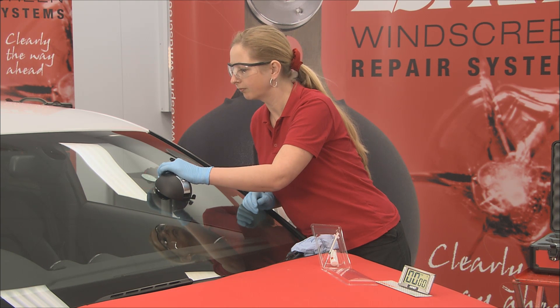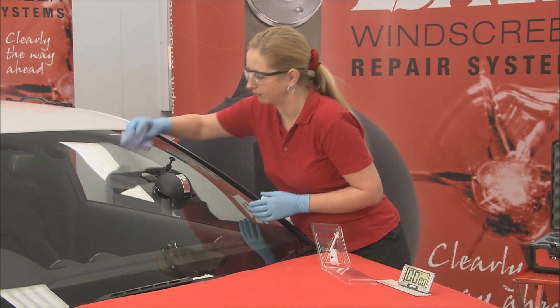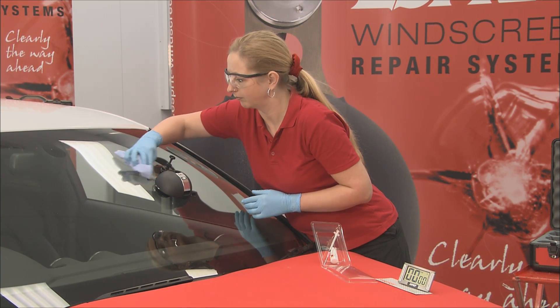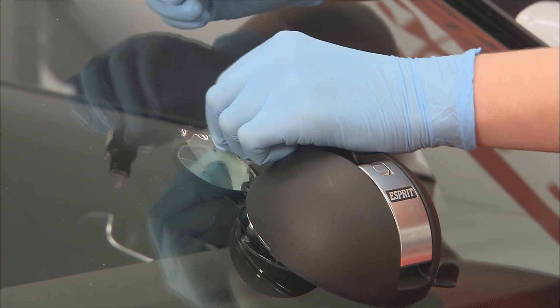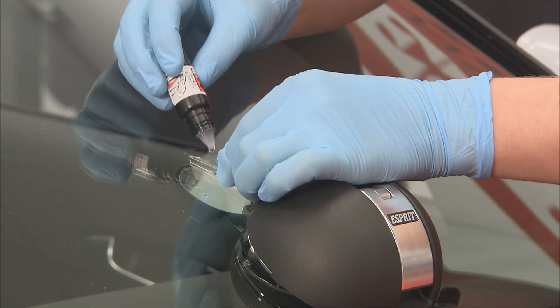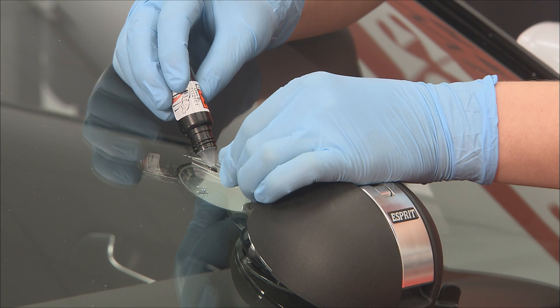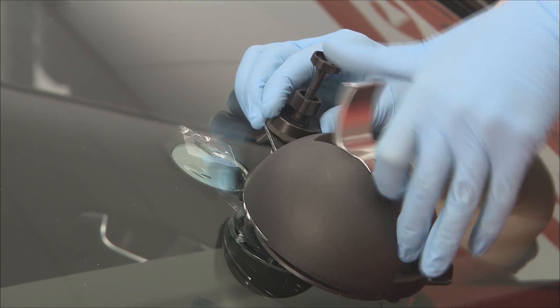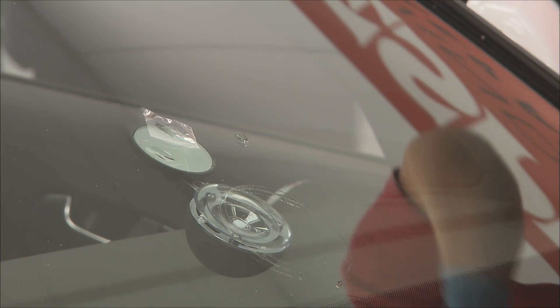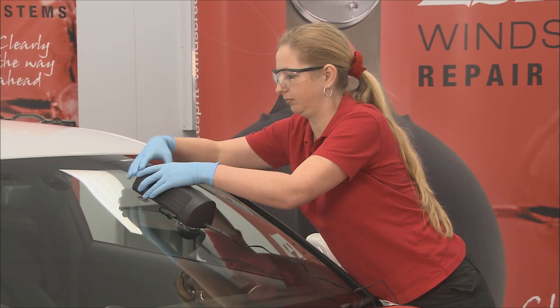To finish the repair, the arm is rotated to one side and any excess resin is wiped off. A drop of pit fill resin is applied to the remaining surface chip, covered with UV plastic sheet and cured for 5 minutes with the UV lamp.